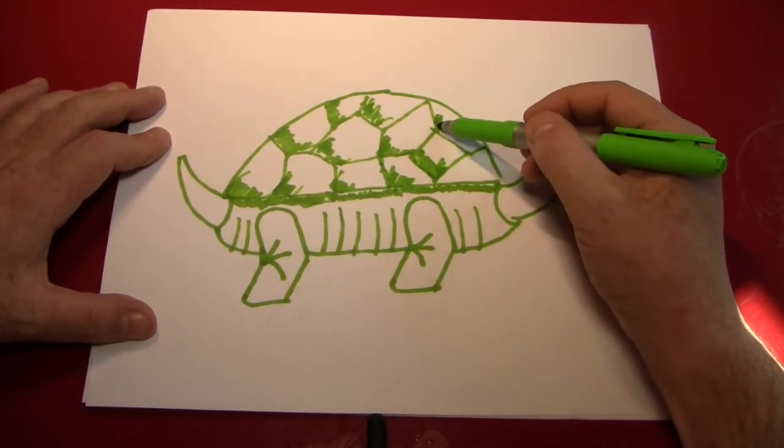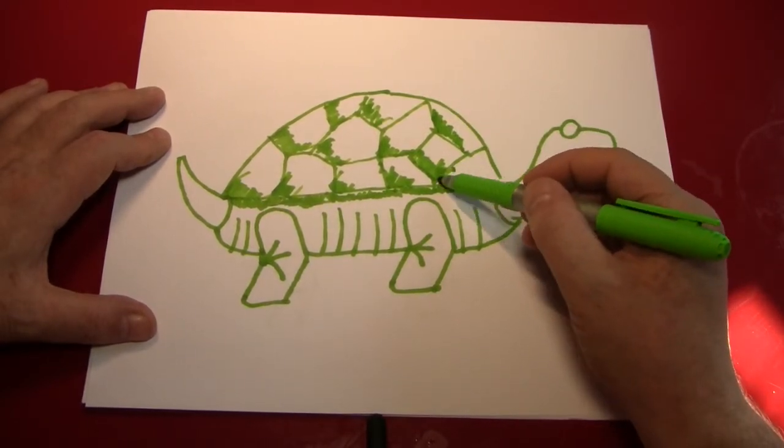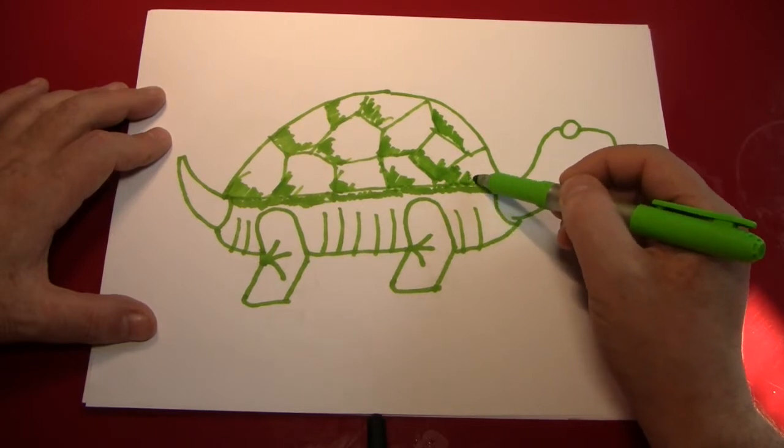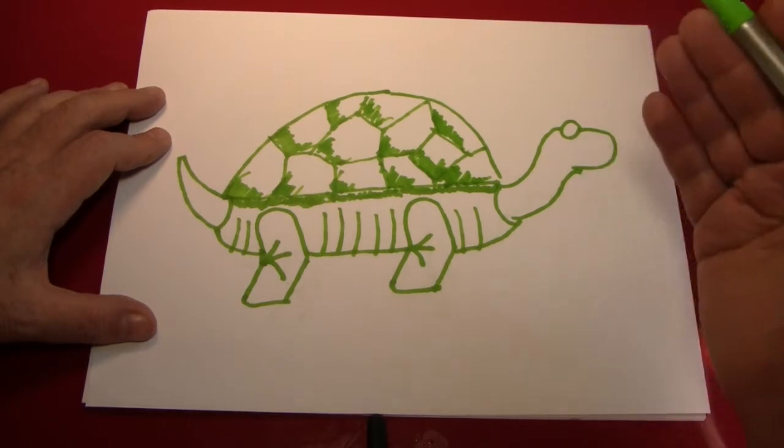Now, tortoises can live to over a hundred years old. And the oldest living tortoise is a hundred and eighty-two years old, they believe. And his name is Jonathan.